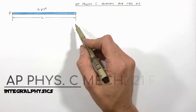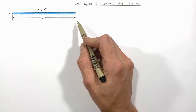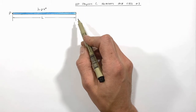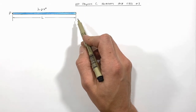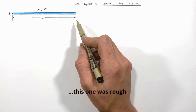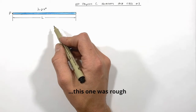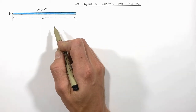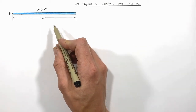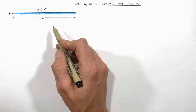Today I want to run through the third free response question from the 2021 AP Physics C Mechanics exam. This problem has all sorts of little pitfalls in it. Honestly, if you hadn't practiced before the exam, you probably weren't going to figure it out during the exam.